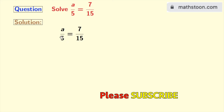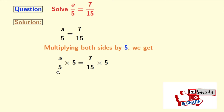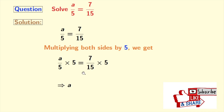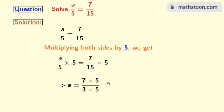left hand side, 5 gets cancelled and we are left with a. And in the right hand side, we have 7 times 5 as numerator and in the denominator, we will write 15 as 3 times 5. So that, 5 gets cancelled here and we get a is equal to 7 by 3.